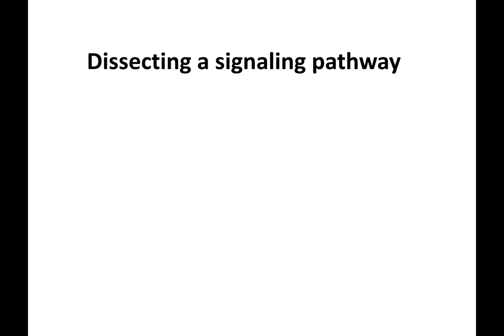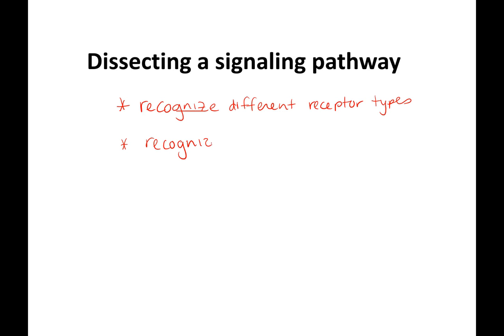What I want you to be able to do from this chapter: one, I want you to be able to recognize different receptor types. And I want you to be able to recognize second messengers, such as cyclic AMP and calcium, IP3, and DAG.